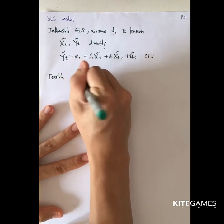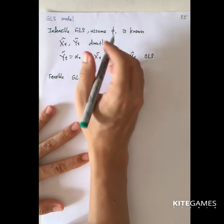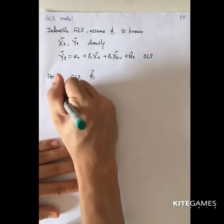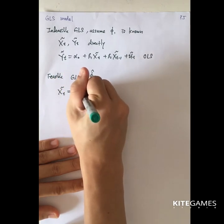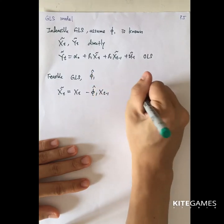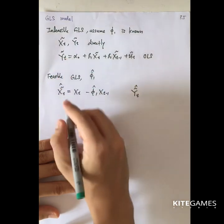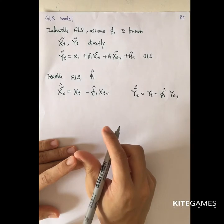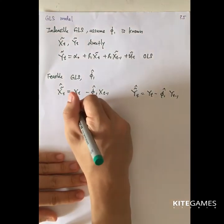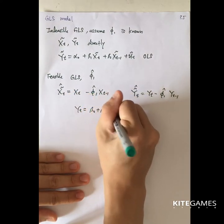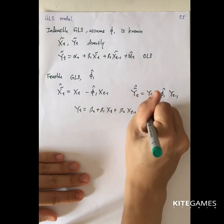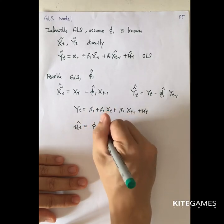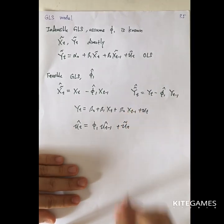Apart from the infeasible GLS, we also have the feasible GLS. Here we assume phi_1 is unknown, but we can estimate it using phi_1-hat. In this case, you calculate everything — x-tilde_t, y-tilde_t — using the estimated phi. You can also calculate u-tilde_t using your original OLS model: first estimate ut from the residuals, then plug in the value of phi_1-hat to calculate the u-tilde_t terms.